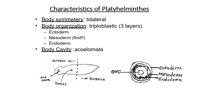The general characteristics of phylum Platyhelminthes: the body symmetry is bilateral. Body organization is triploblastic, meaning three layers are present — ectoderm, mesoderm, and endoderm. Body cavity is acoelomate type.